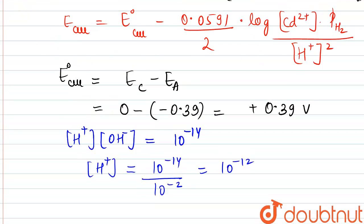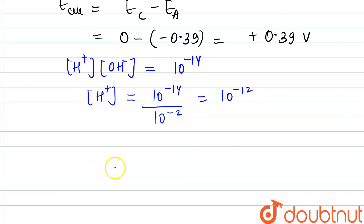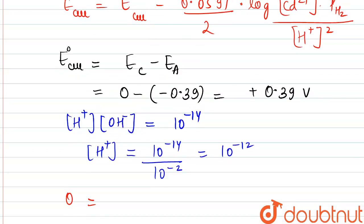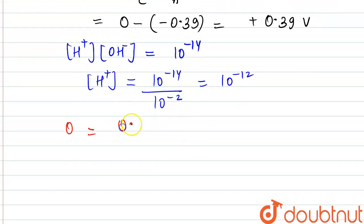Now putting these respective values in the Nernst equation: E cell is given already as 0. This will become equal to E° of the cell, which we just calculated, came out to be equal to 0.39 volt minus 0.059 divided by 2 into log of...